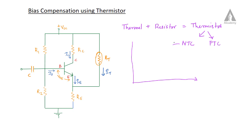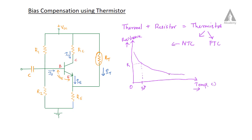For the NTC thermistor, the resistance value — the value of the thermistor — decreases with temperature. We will get some resistance value at 30 degrees Celsius, but we will get a decreased resistance value at 100 degrees Celsius. So the NTC thermistor's resistance value decreases with the increase in temperature.